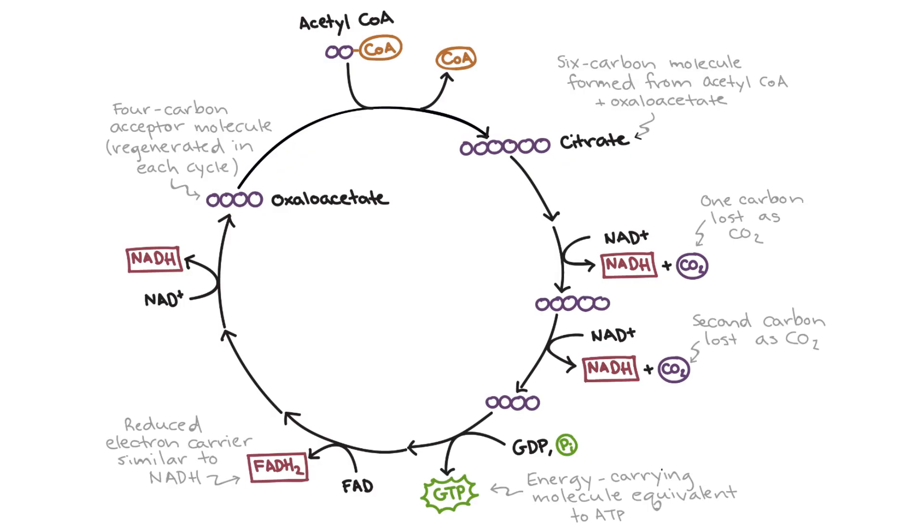Per one glucose molecule, the Krebs cycle happens twice because we start off with two acetyl-CoA molecules. This means per one glucose molecule, we generate a total of two ATP, one from each Krebs cycle.